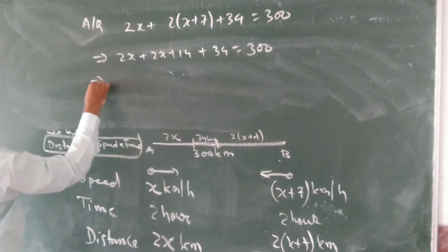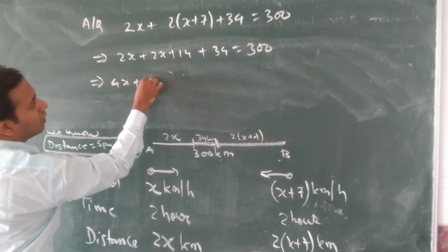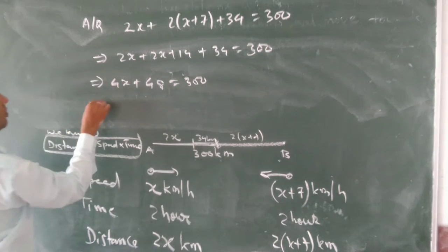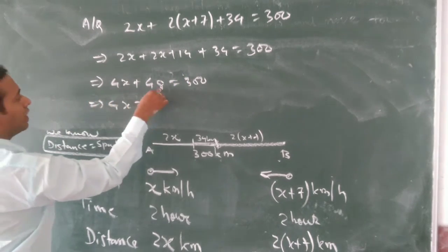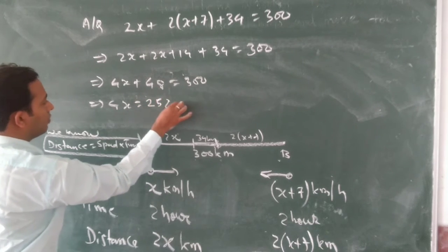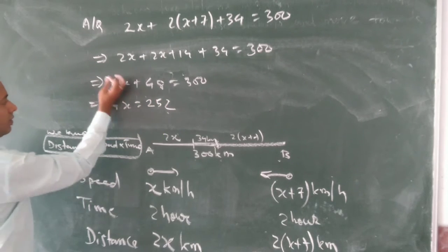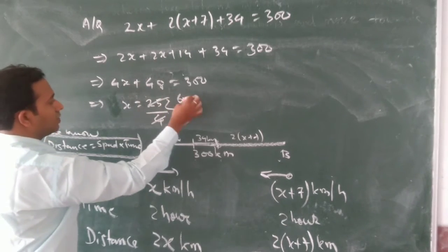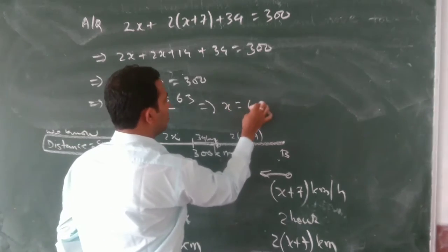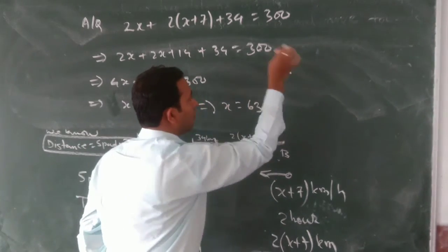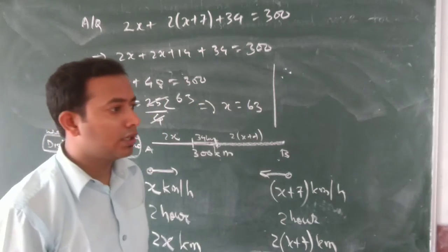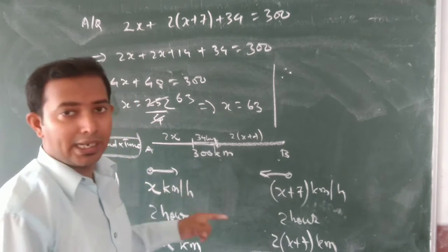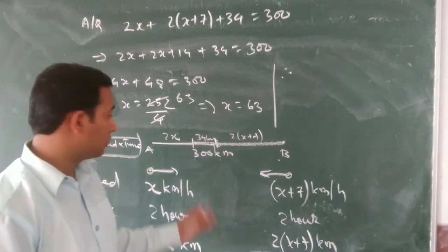Simplifying, we get 4x plus 48 equals 300. Taking 48 to the other side gives 4x equals 252. Therefore, the speed of the motorcyclist at place A is x equals 63 kilometers per hour.